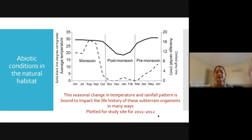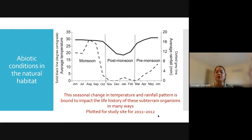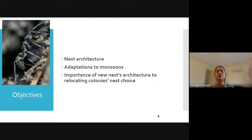In this part of the globe, monsoon brings about great changes in the abiotic conditions because of the high rainfall that occurs in this area during monsoon, as indicated by the gray line in the first panel. The rest of the year there is hardly any rain. Temperature keeps fluctuating, and during post-monsoon it gets a bit cooler, but otherwise hovers around 28 degrees centigrade. For subterranean creatures, a combination of high temperature and heavy rainfall is bound to cause changes to their life history. We were curious to see how Diacamma indicum adapts to these changes, so as a first step we wanted to understand the nest architecture of the species and what adaptations to nest structure occur in response to monsoons.